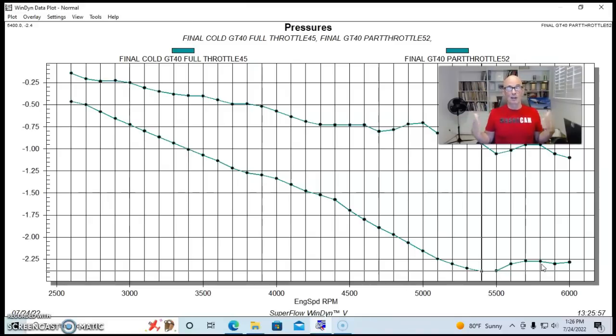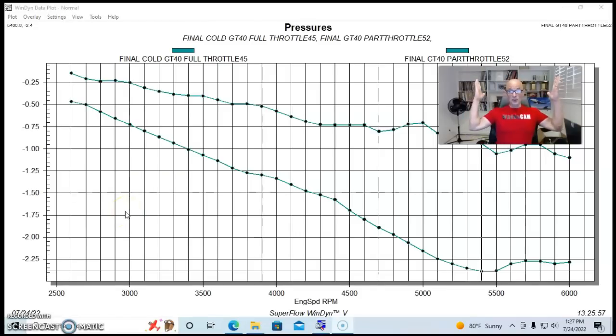So as we can see here, because we had the throttle at half throttle, we increased the vacuum, which lowered the power output produced by our combination. Let's get to our conclusion. I almost forgot.